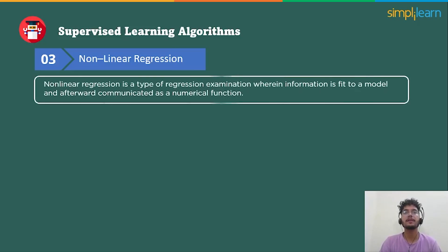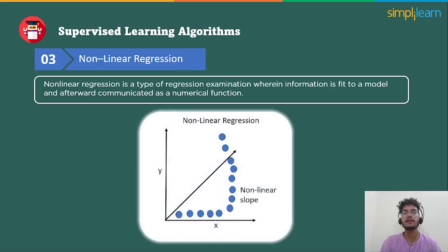Non-linear regression is a type of regression in which data is fit to a model and then expressed as a mathematical function. Simple linear regression relates two factors with a straight line, while non-linear regression relates two factors in a non-linear relationship. Non-linear regression can be used to predict population growth over time or the relationship between GDP and time of a country.